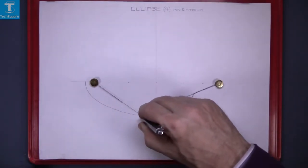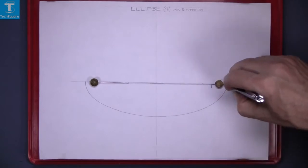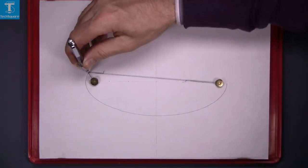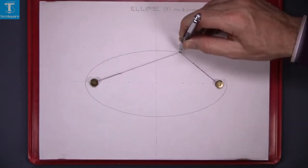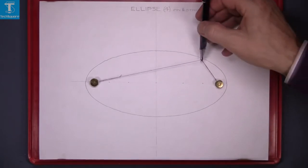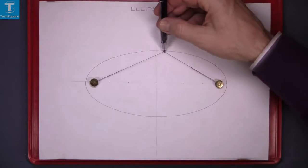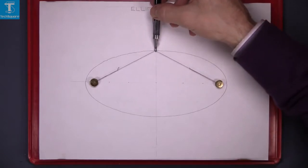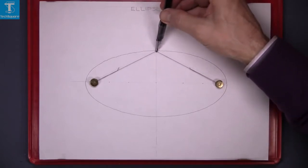Start at one end of the major axis with the string taut and the pencil in contact with the paper. Draw the elliptical curve. This is a very smooth way of drawing an ellipse but not suitable for an examination situation. The string is the length of the major axis.